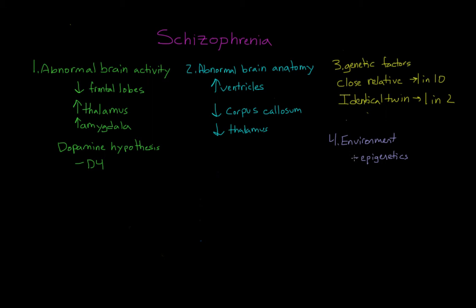While we can pretty much say for sure that there is no one environment that can cause someone to develop schizophrenia, we do know that things like nutrition, viral infections, or toxins can all influence whether the genes carried by individuals are turned on or turned off. So someone might have many of the genetic markers associated with schizophrenia, but unless they're exposed to some kind of environmental trigger, they might not develop the disorder at all. And the opposite is also true — a genetic predisposition combined with an environmental trigger could increase the likelihood of developing the disorder later in life.